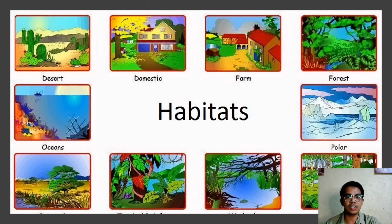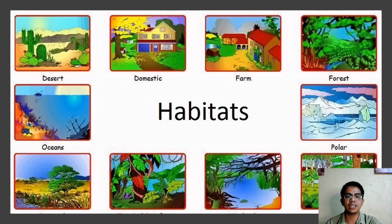These are some of the habitats of our biodiversity. For wild animals, we have desert, forests, savanna, grassland, lakes, rivers, oceans, and polars. For domestic animals, we have domestic settings. For agricultural biodiversity, we have farms.